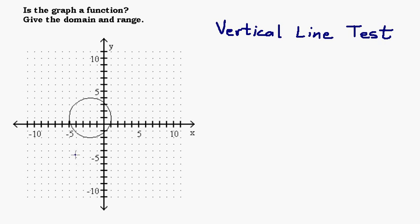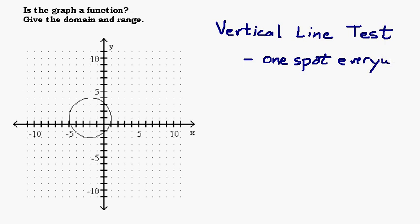Another way to say it would be: if you drew infinitely many vertical lines and they only touched in one spot, then your graph would be a function — it would pass the test. To pass the test it has to intersect in one spot everywhere. So one bad vertical line and it's out — it's not a function.